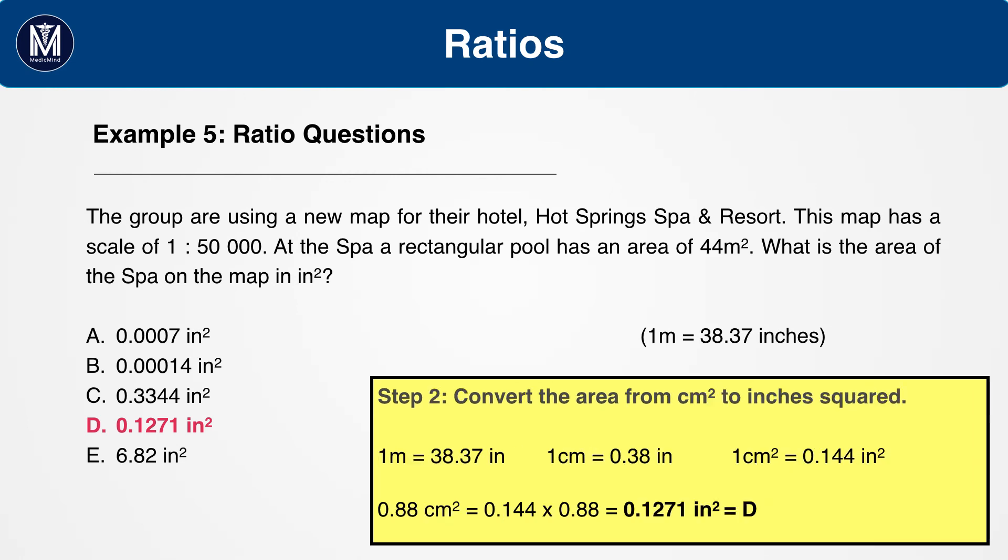Now, convert this area to inches squared. We know that 1 metre equals 38.37 inches. So 1 centimetre equals 0.38 inches. And therefore, 1 centimetre squared equals 0.144 inches squared.